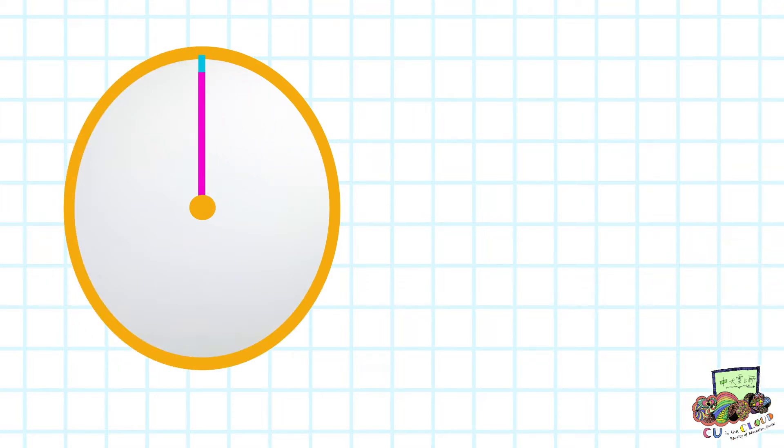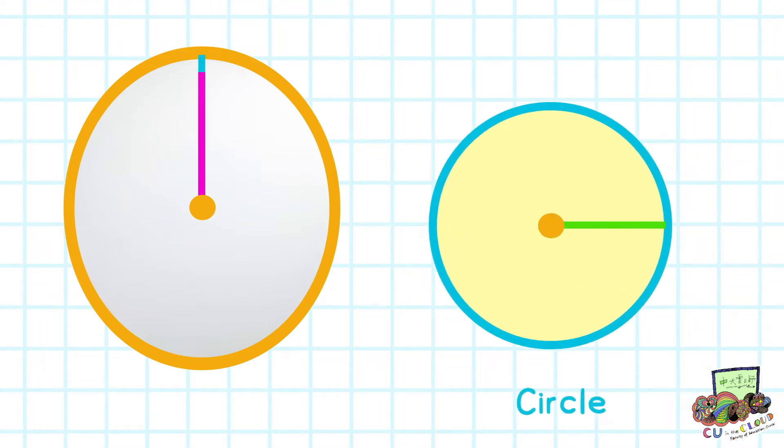As you can see, the distance from the center to the edges of the shape is not equal, while a circle is always equal distance from its center to the circumference. Therefore, this is not a circle.